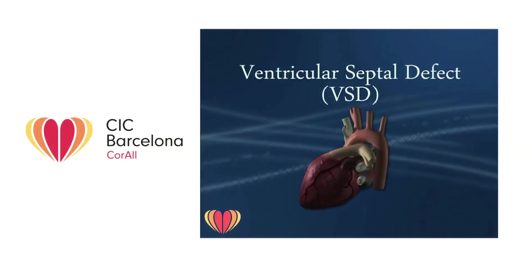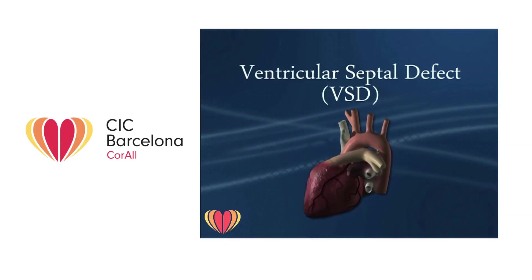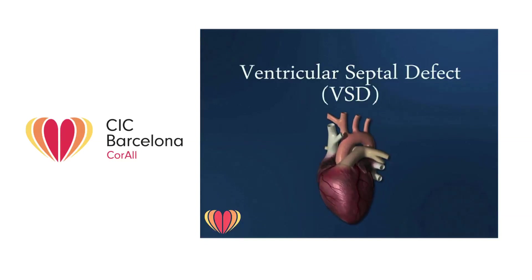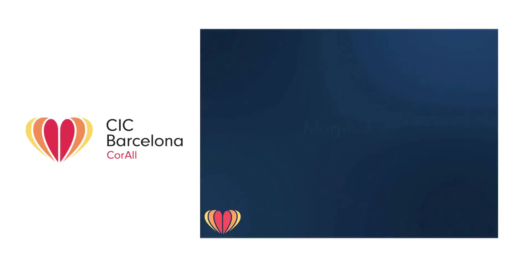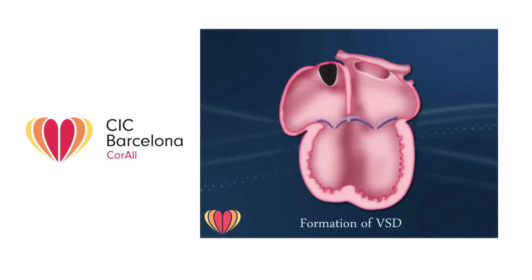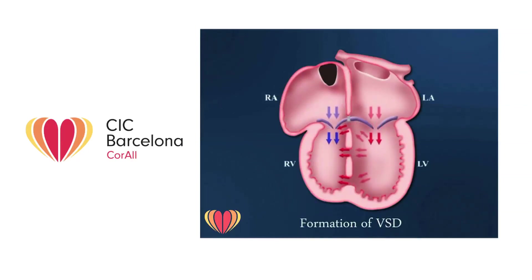Ventricular septal defect is the most common type of congenital heart disease. It occurs in 32% of infants born with congenital heart disease. It involves an abnormal communication between the right ventricle and the left ventricle that can be found in various positions within the ventricular septum.